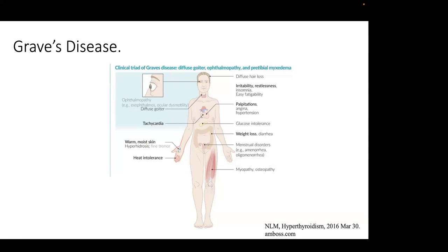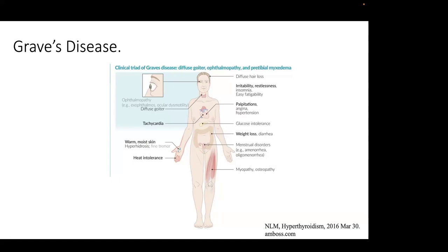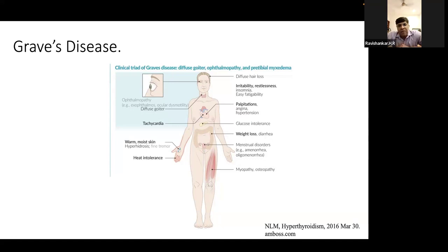Graves disease is a type 2 hypersensitivity reaction associated with TSH Receptor Stimulating Immunoglobulin (TSI). The TSI (also called thyroid-stimulating immunoglobulin) prevents the negative feedback mechanism from working — TSH receptor keeps responding despite high T3/T4 levels, causing unchecked thyroid hormone secretion.